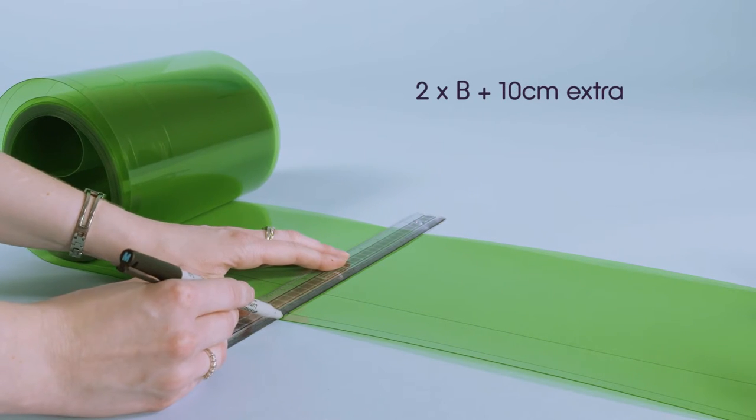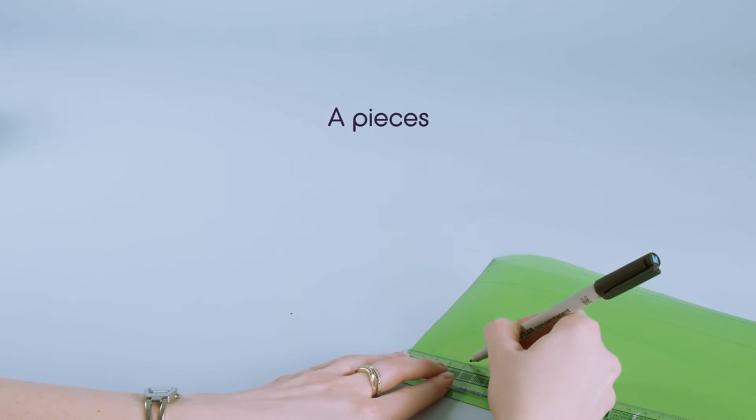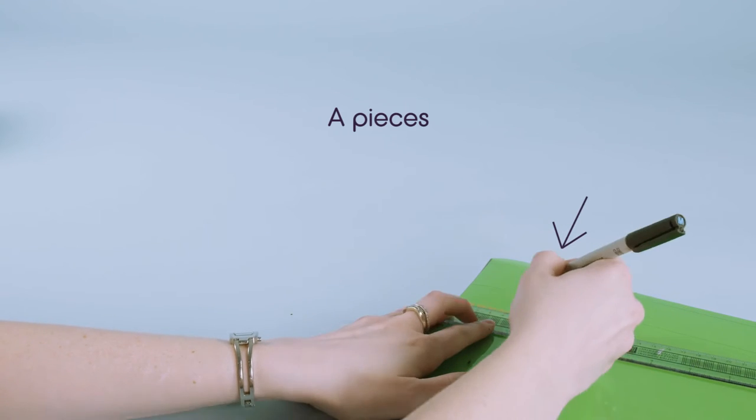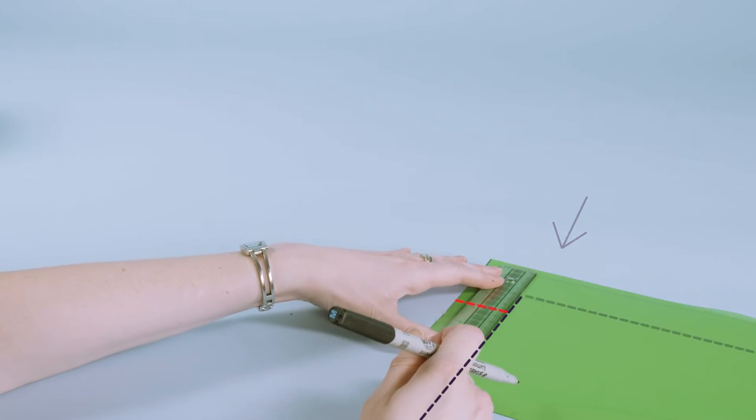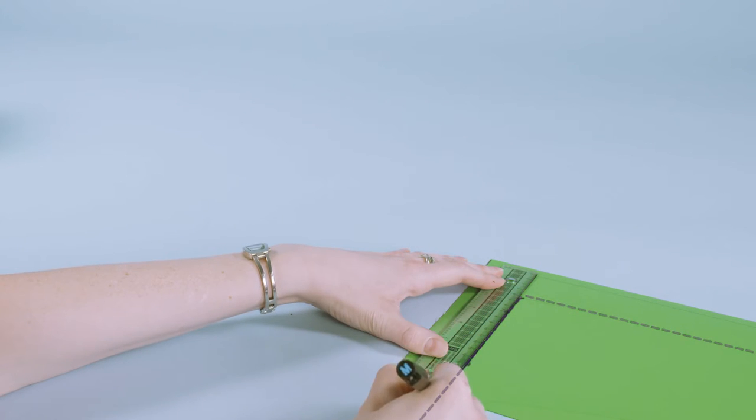Two times B plus 10cm. For the sections marked A, with the two crease lines at the top, mark a line 4cm from the short side, running from the lower crease to the bottom edge.